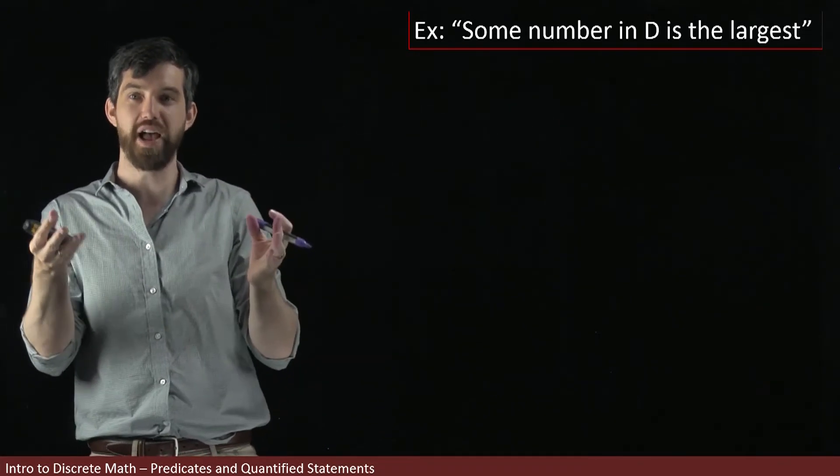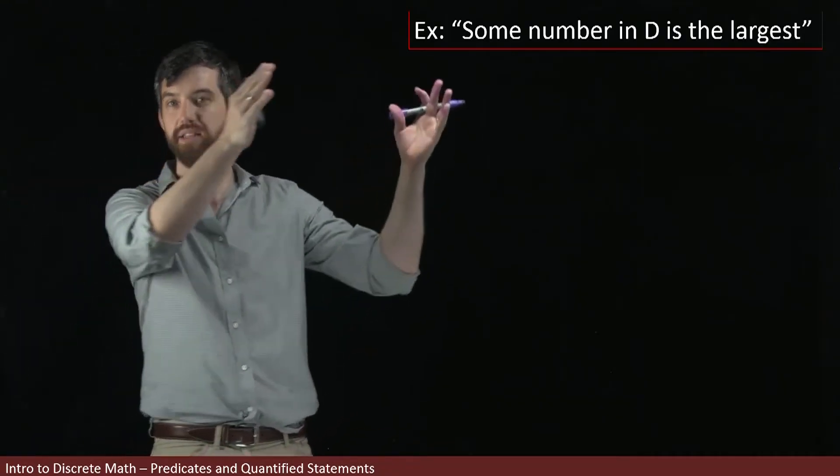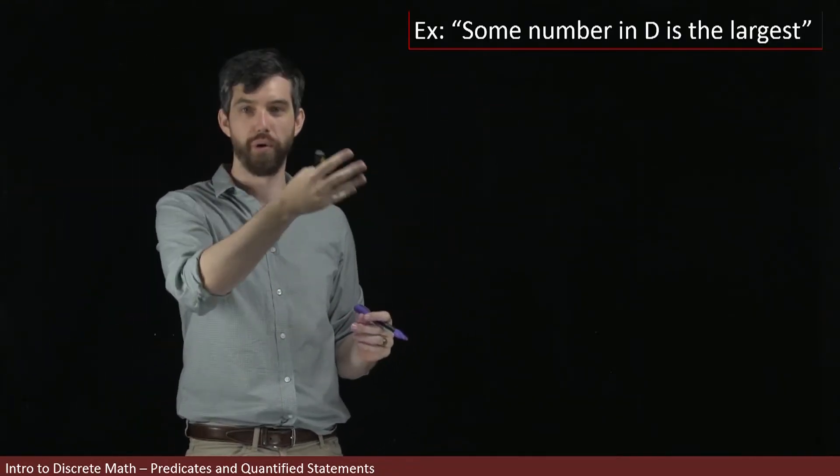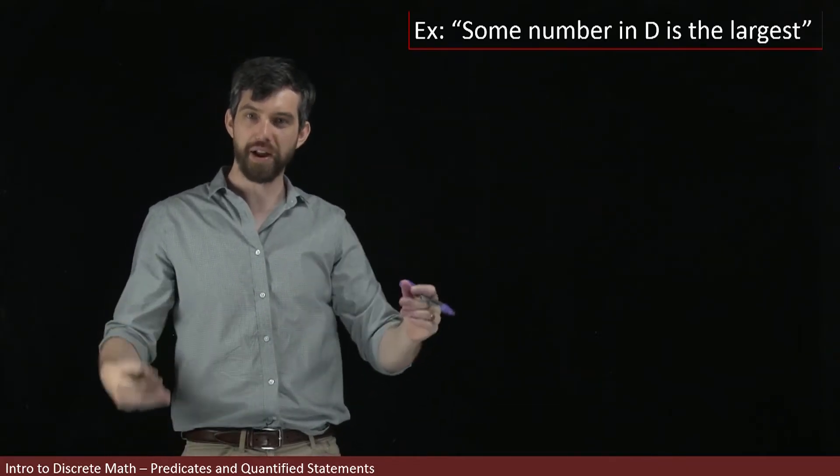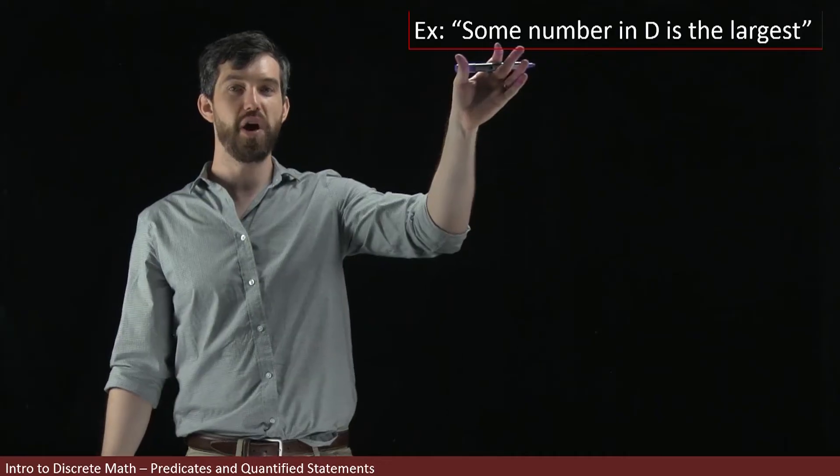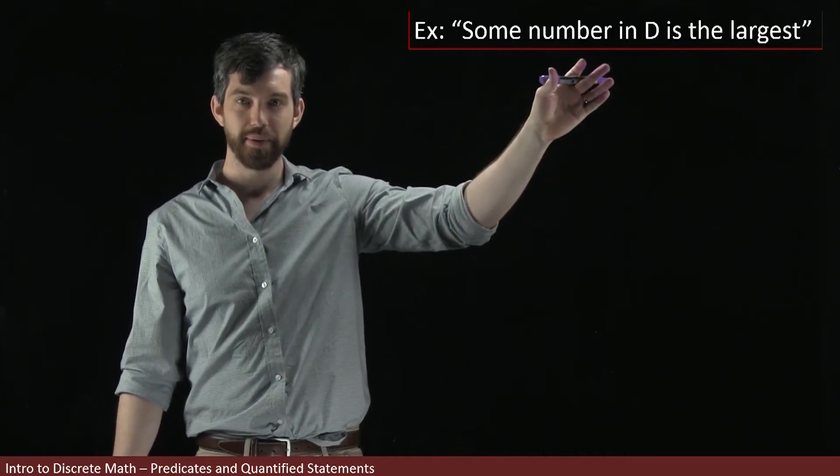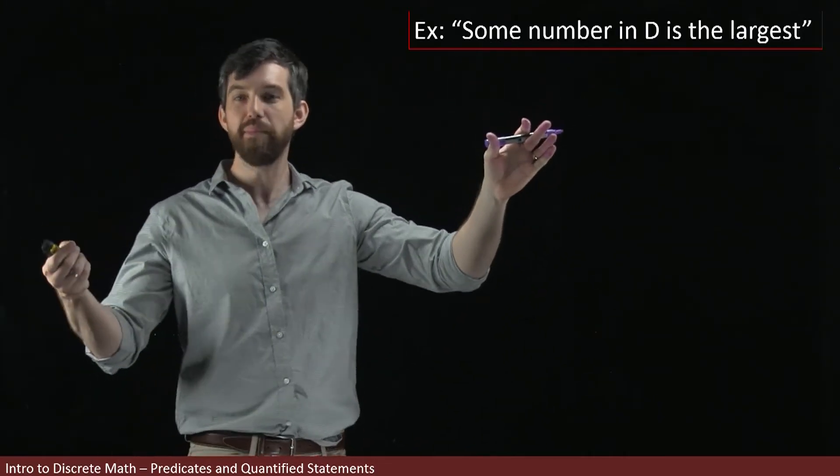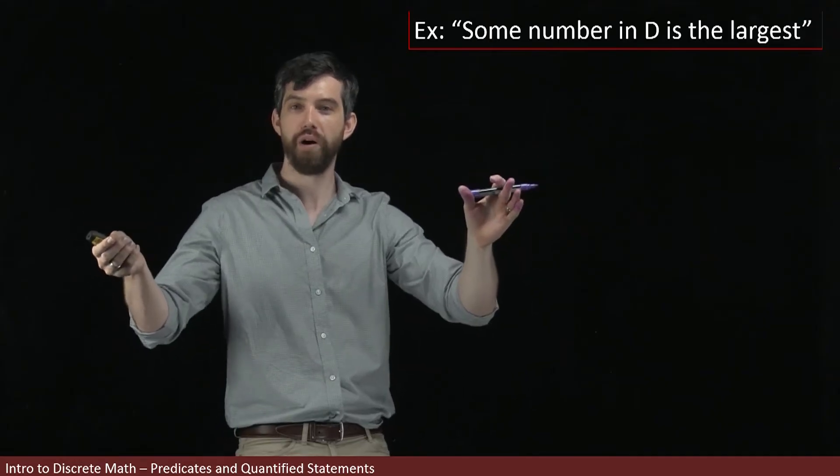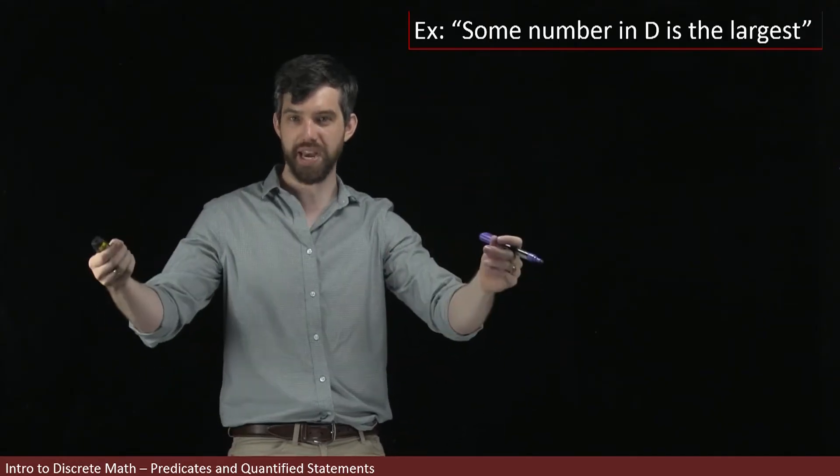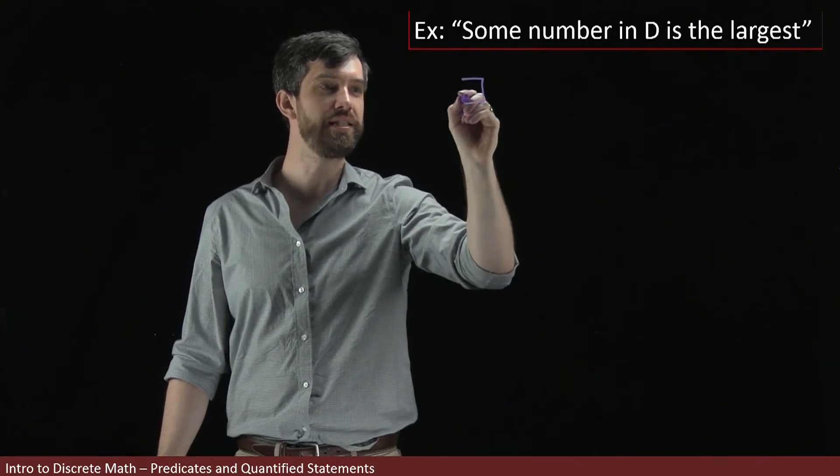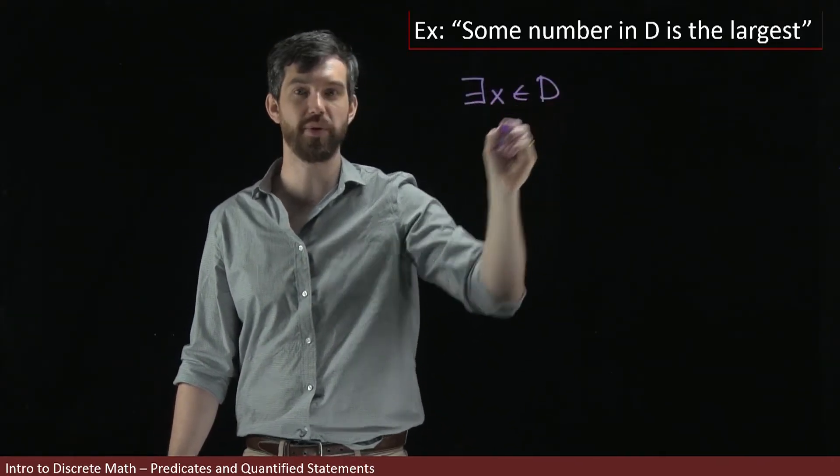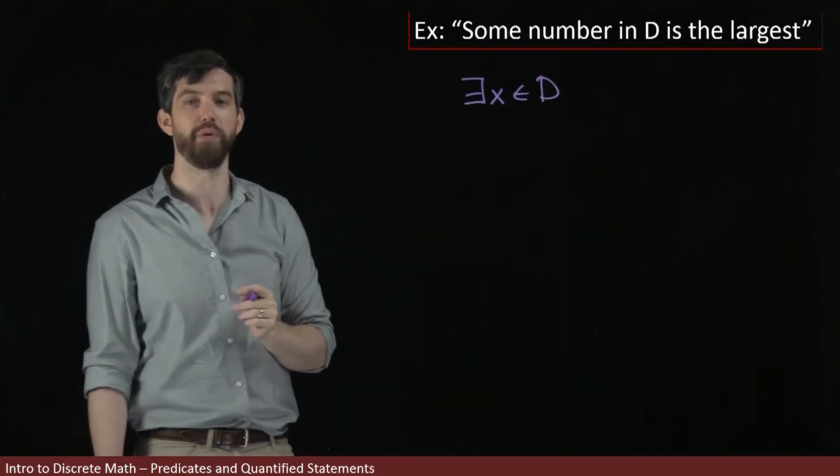So whether this statement is true or false depends on what the domain is. But as long as the domain is specified and we understand it in context, then this is a statement that's either true or false. Now, I want to break it out in terms of its quantifiers. Note that I've got some number, and some number is a code word for there exists a number. So I'll say there exists some x inside of the domain.